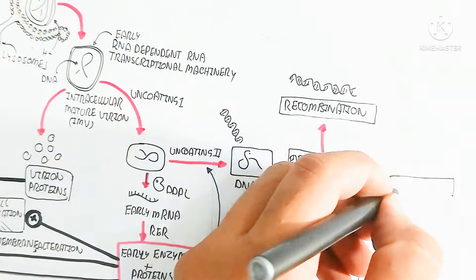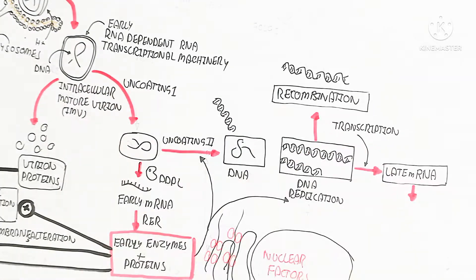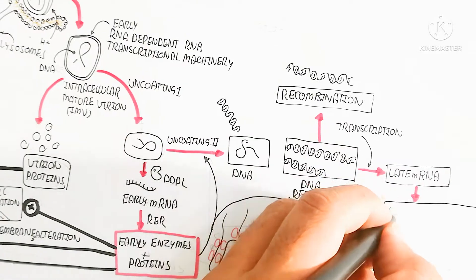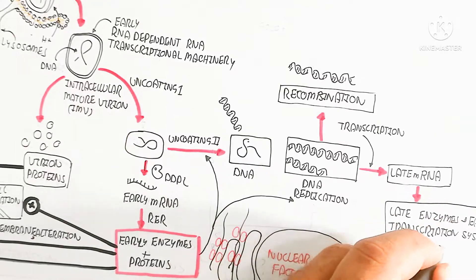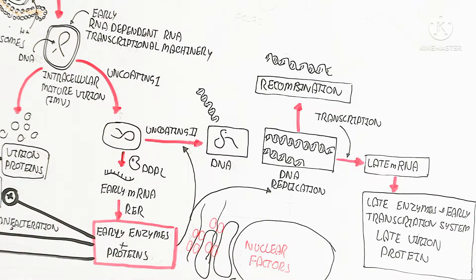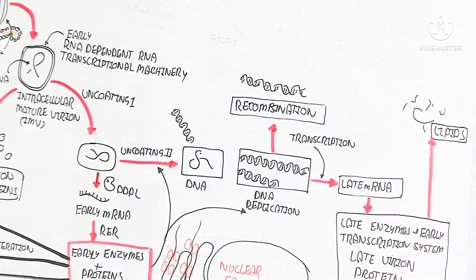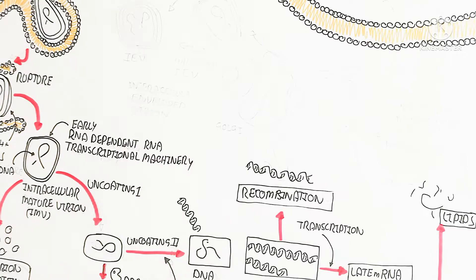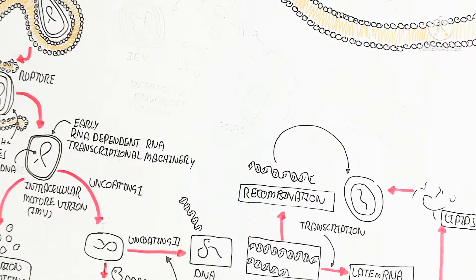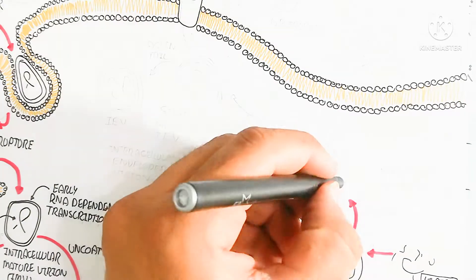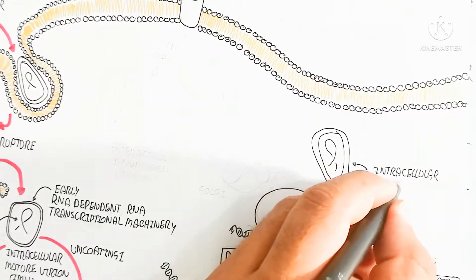The replicated DNA undergoes transcription to produce late messenger RNA. This late mRNA encodes late enzymes, an early transcription system, and late virion proteins, which are combined together with lipid production. The late enzymes and early transcription system are used for producing late virion proteins, and lipid production and virion proteins are assembled together.